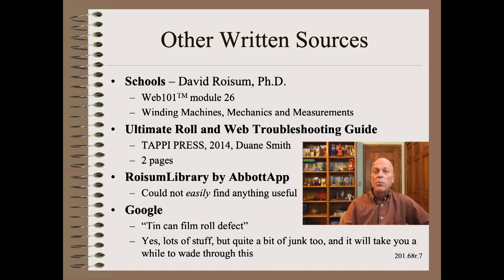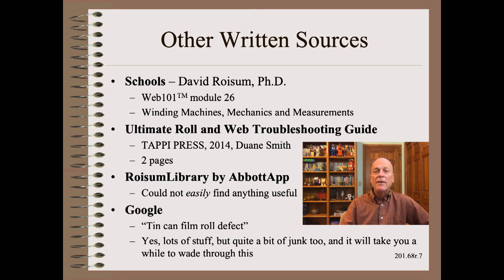I also tried a brief Google search. Keyword strategies are super important, because the tin can is a word used for a metal container. I used 'tin can film roll defect' and found quite a bit of stuff, including quite a bit of junk. If any of you knows of a good paper on this subject, please share in the comment section below.